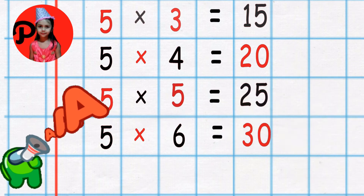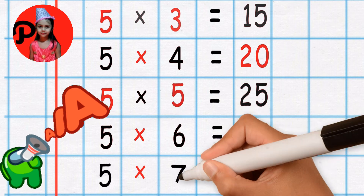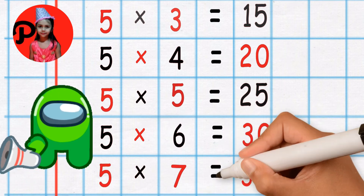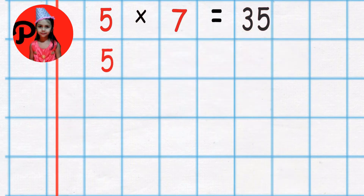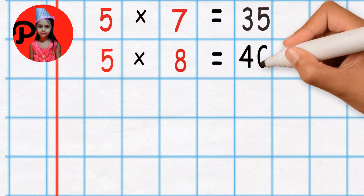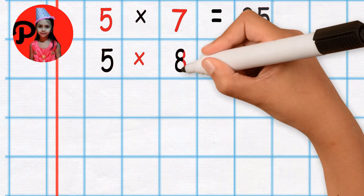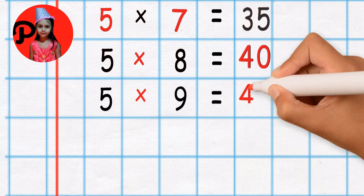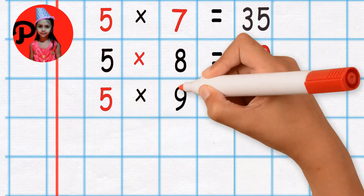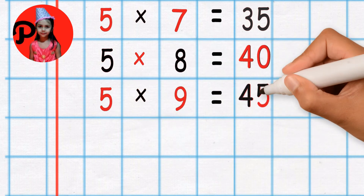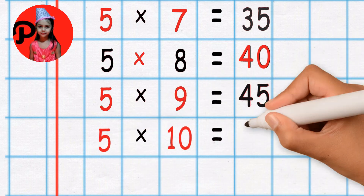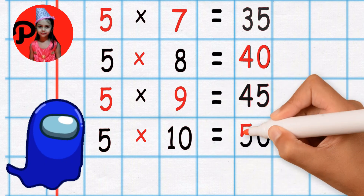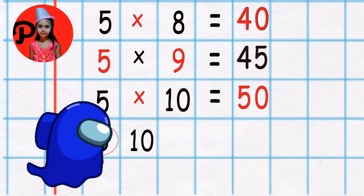Five sevens are thirty-five. Five eights are forty. Five nines are forty-five. Five tens are fifty.